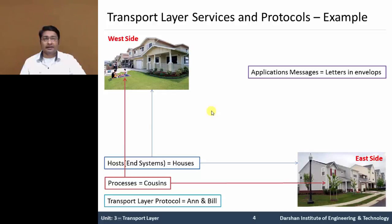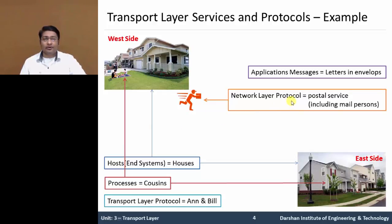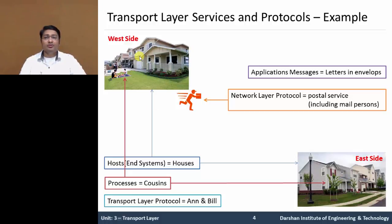So, a total of 144 letters are there. The network layer protocol is denoted as postal services, including the mail person. N's responsibility is collecting mail from other members and distributing it to the postman. Similarly, Bill's responsibility is collecting mail from other cousins and passing it to the postman, and also distributing incoming mail to the other members when received from the east side. The distributing and collecting of mail happens on the end-system side, not on the network side. The network side responsibility belongs to postal services, including the mail person.